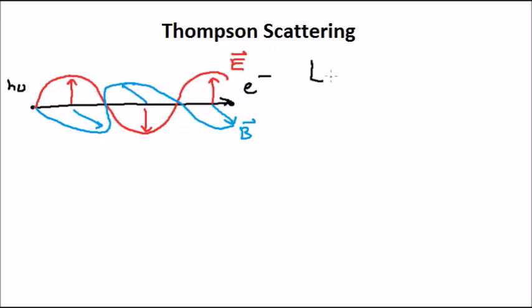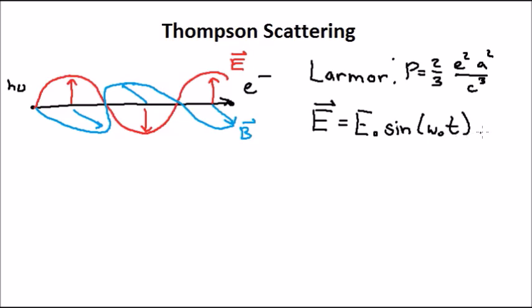The electric field component of the plane wave will accelerate the electron, and as we've seen with the Larmor formula, accelerated charged particles radiate. Specifically, they radiate with a power 2/3 times the charge squared, times the acceleration squared, divided by the speed of light cubed. And let's also write down an expression for the electric field inducing this acceleration. E is equal to E₀ sin(ωt) in the z direction, assuming that the wave we've drawn here is propagating in the x direction.